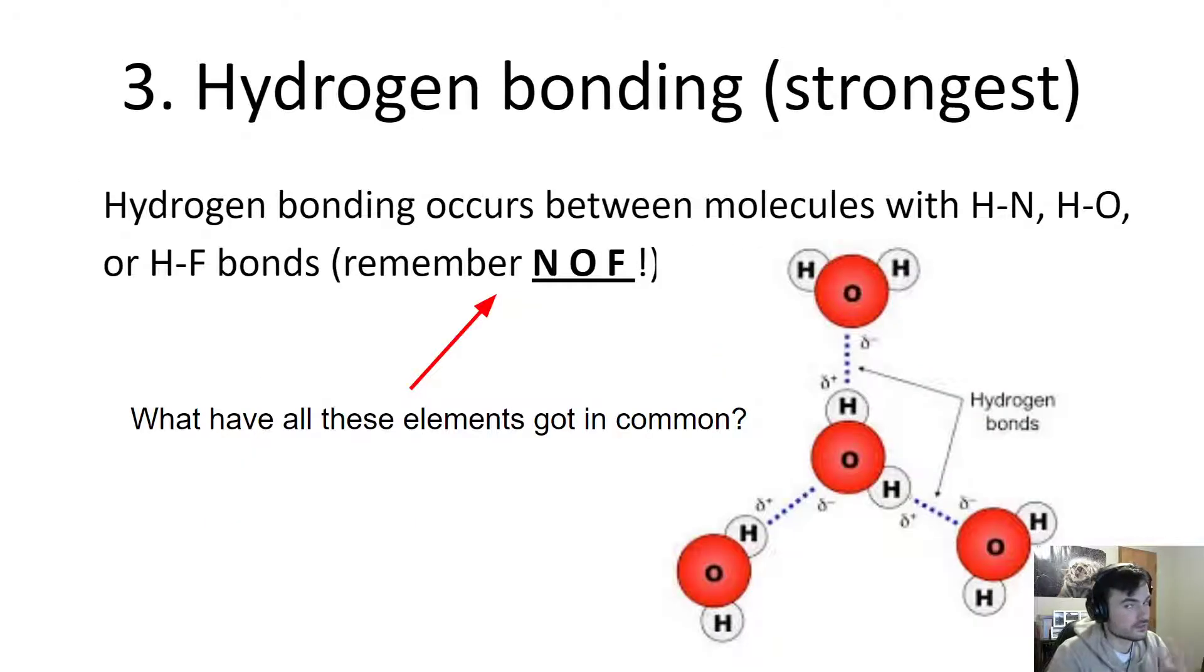The third type is hydrogen bonding. This is the strongest type of intermolecular attraction we have. Hydrogen bonding occurs between molecules with H-N, H-O, or H-F bonds. To remember this, we just think NOF - nitrogen, oxygen, and fluorine.